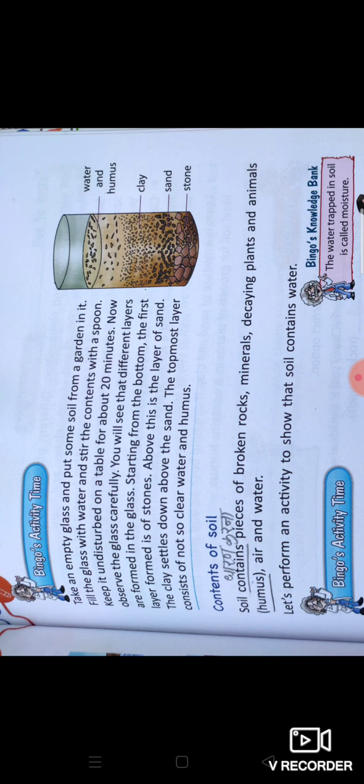You will see that different layers are formed in the glass. Starting from the bottom, the first layer formed is of stones. Above this is the layer of sand. The clay settles down above the sand, and the topmost layer consists of not so clear water and humus.